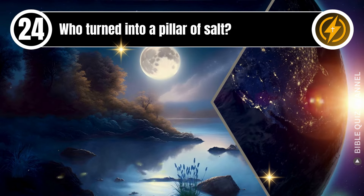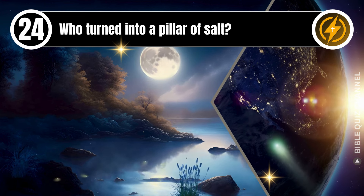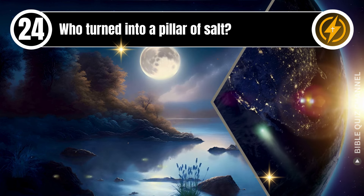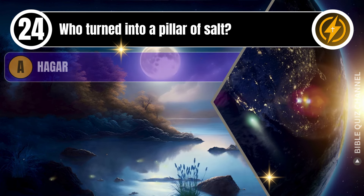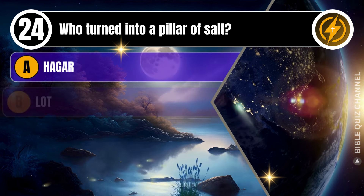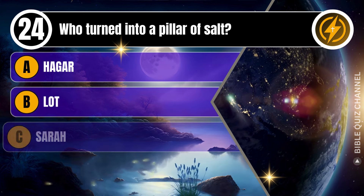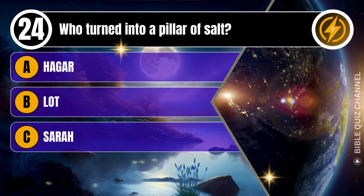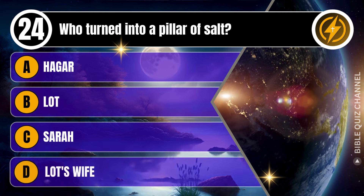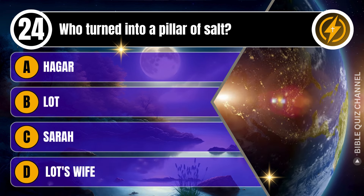Question 24. Who turned into a pillar of salt? A. Hagar. B. Lot. C. Sarah. D. Lot's wife. You get 10 seconds.